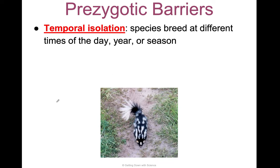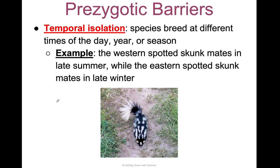Temporal isolation is when animals breed at different times of the day, year, or season. A nocturnal animal is never going to be mating with a diurnal one. For example, the Western spotted skunk mates in late summer, while the Eastern spotted skunk mates in late winter — they're never going to mate with each other because one does it in the summer and one does it in the winter.